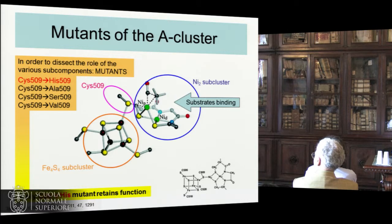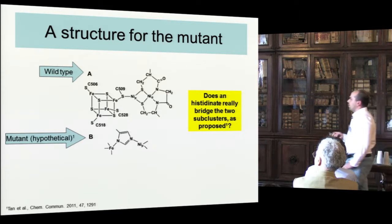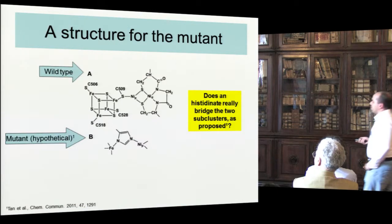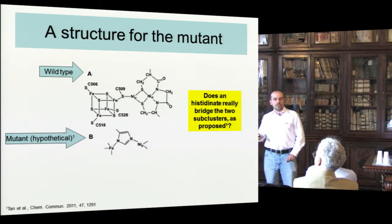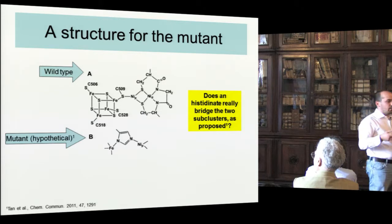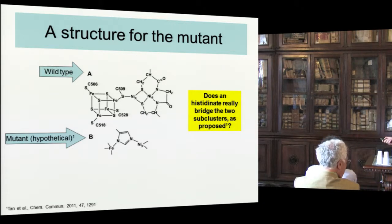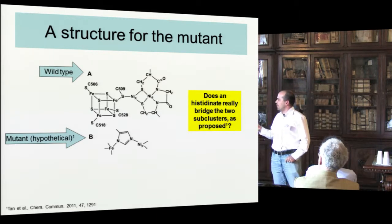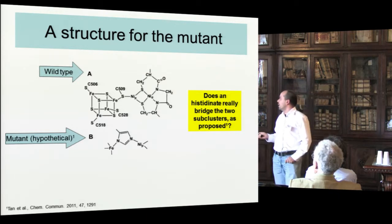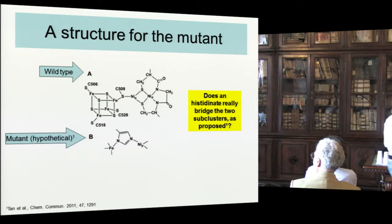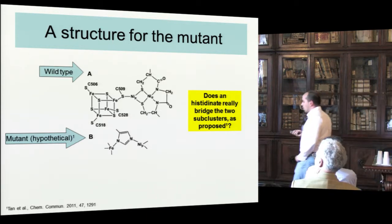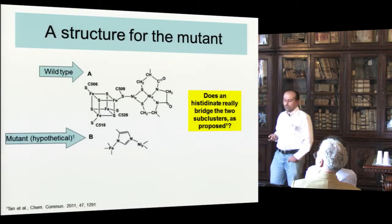If we consider this mutation towards histidine in particular, we have to consider that we substitute a sulfur atom with an imidazole ring, which is obviously much bulkier. The authors of the mutational study, who tend to support the idea that the iron-4S4 cluster is important for charge delocalization, propose that the histidine is placed in between the two subclusters, replacing from a spatial point of view cysteine 509. The key question is: is it actually possible to substitute, in this way, a cysteine with an imidazole ring? This is what we have been trying to study.